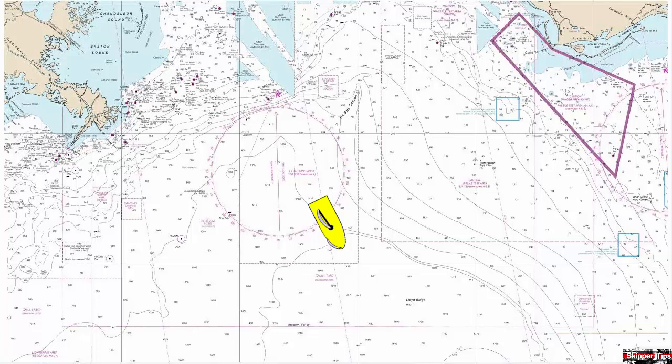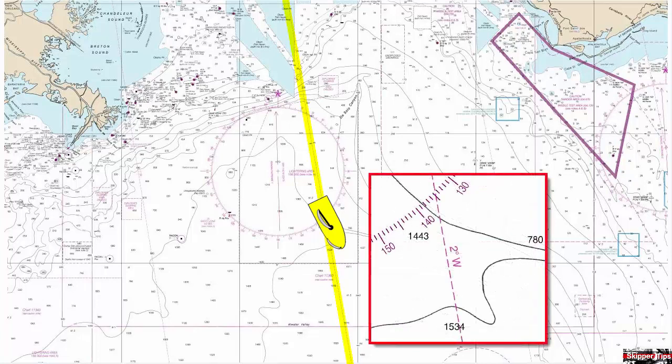On this chart of the Gulf of Mexico, you can see that our compass rows shows only true direction. We look for an isogonic line closest to our location. This isogonic line shows 2 degrees west.